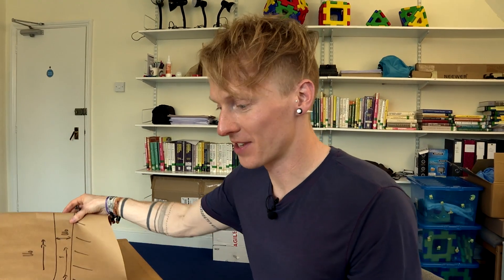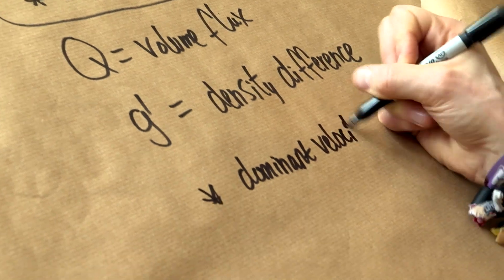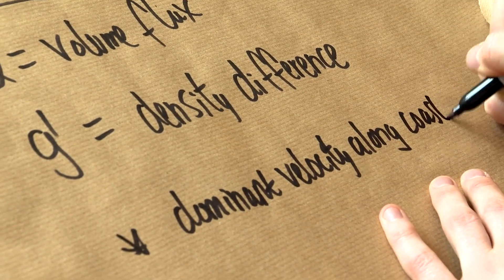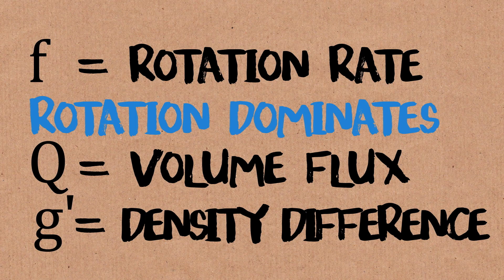We assume we have this dominant velocity along the coast. And again, we can look at satellite data, we can look at experiments, and this is true. So that's going to be our second assumption.